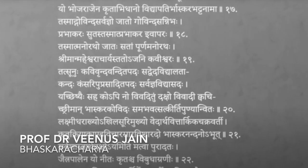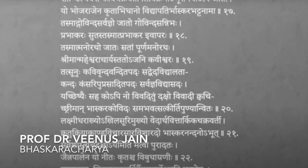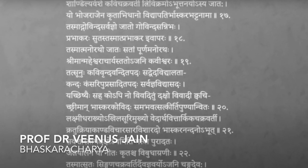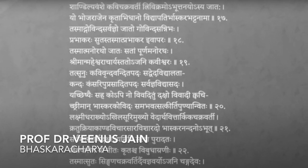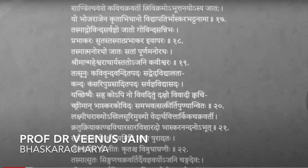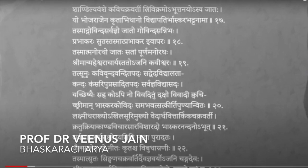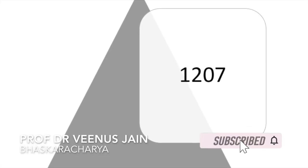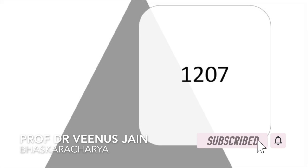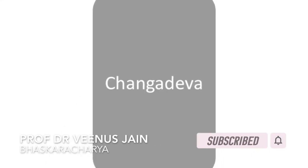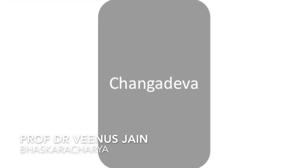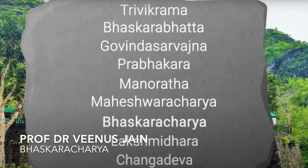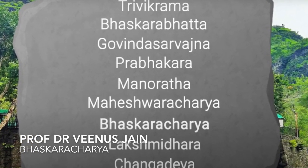The Chandrika Devi Mandir near Charlie's Gaon in the Jalgaon district of Maharashtra has an inscription that gives details of Bhaskar's ancestry. This inscription, dating from 1207 CE, was made at the request of Changadeva, the grandson of Bhaskaracharya, and gives the full lineage of Bhaskaracharya.